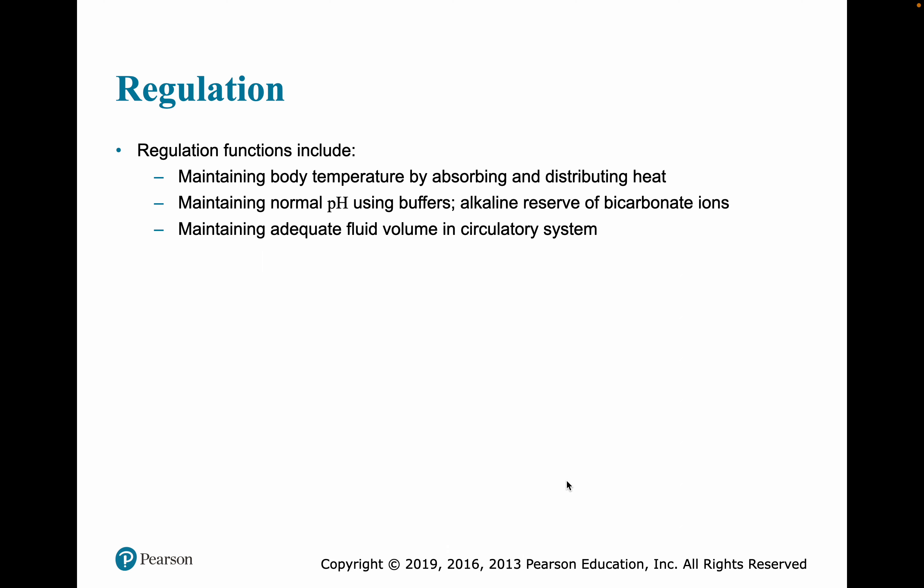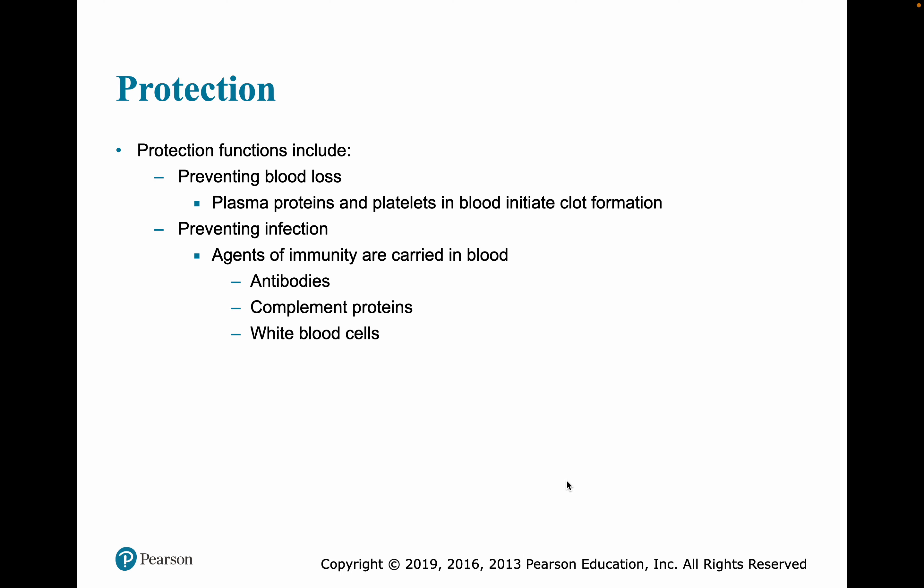Regulation includes maintaining body temperature by absorbing and distributing heat, normal pH using buffers — we have an alkaline reserve of bicarbonate ions in our blood — and maintaining adequate fluid volume in the circulatory system for efficient delivery of materials. Protection involves preventing blood loss: plasma proteins and platelets initiate clot formation. Prevention of infection is also key — agents of immunity carried in the blood include antibodies, complement proteins, and white blood cells.